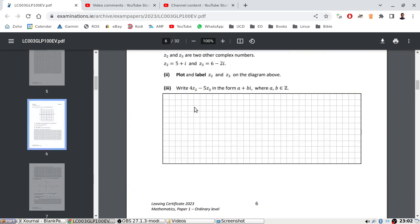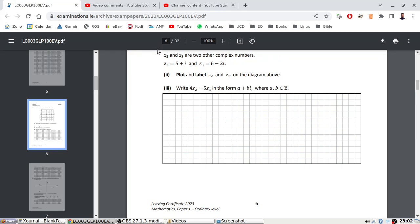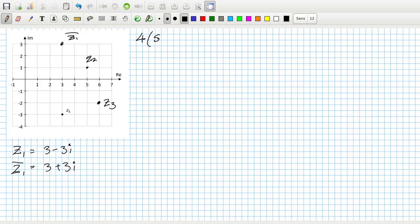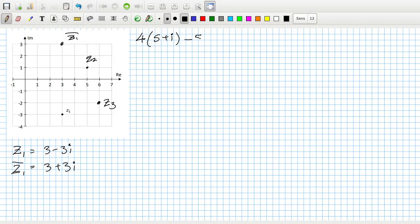And then we want to calculate 4 times Z2, which is 5 plus i, minus 5 times Z3, which is 6 minus 2i. That will be 20 plus 4i minus 30 plus 10i, which is minus 10 plus 14i.